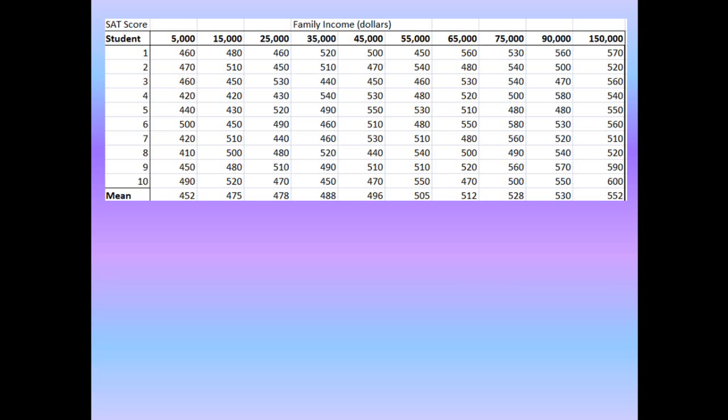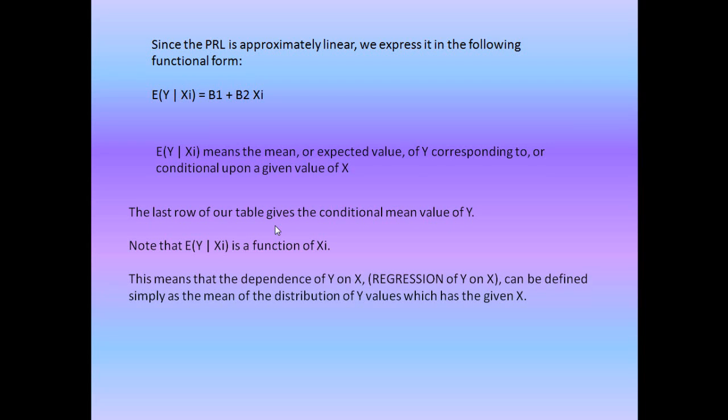Thus according to the table, the expected value of y given xi equals 5000 was 452. The last row of the table gives the conditional mean value of y. Note that E(Y | Xi) is a function of xi. This means that the dependence of y on x, or the regression of y on x, can be defined simply as the mean of the distribution of y values which has the given x. In other words, the population regression line is a line that passes through the conditional means of y.